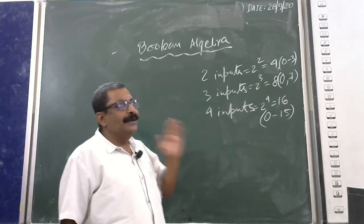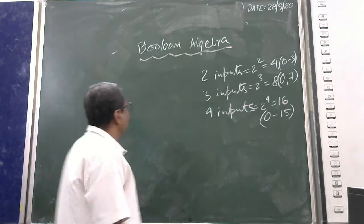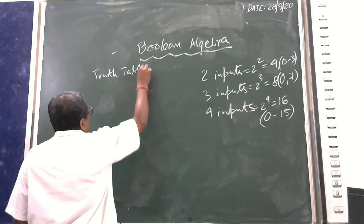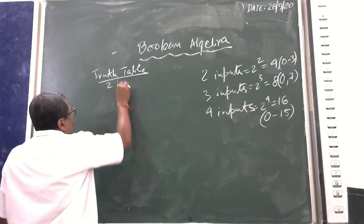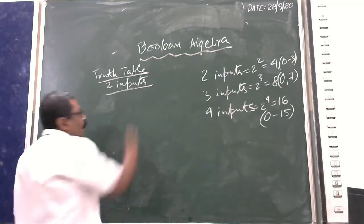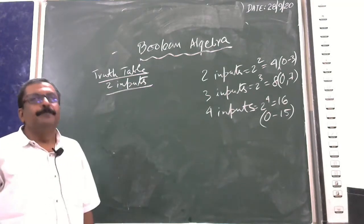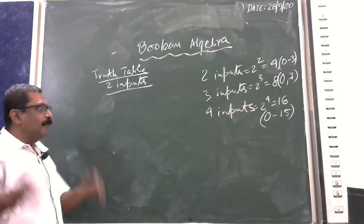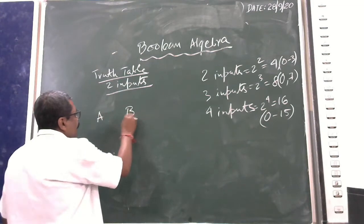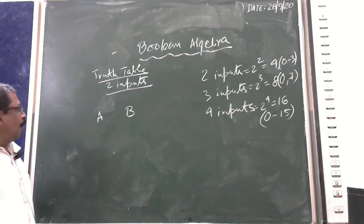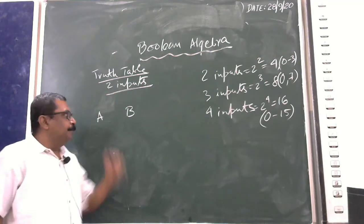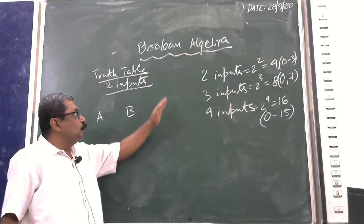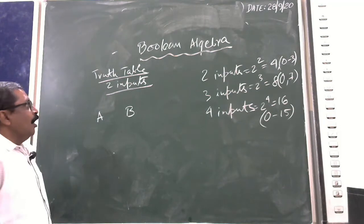First we need to understand how to draw a truth table. We are working with two inputs, which I have named A and B. For two inputs there are four combinations, numbered 0 to 3. The columns represent A and B.